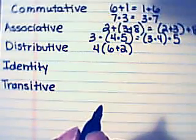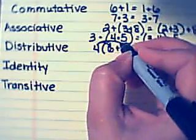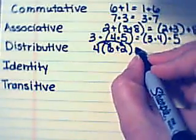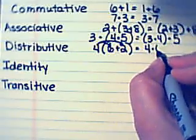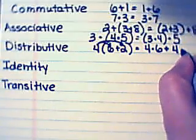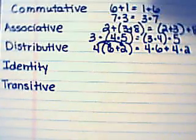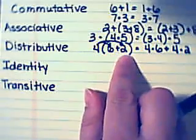What the distributive property says is that you could distribute the 4 to the 6 and the 4 to the 2. And you could solve this by saying 4 times 6 plus 4 times 2. And you would end up with the same thing as if you would have done 6 plus 2 times 4.